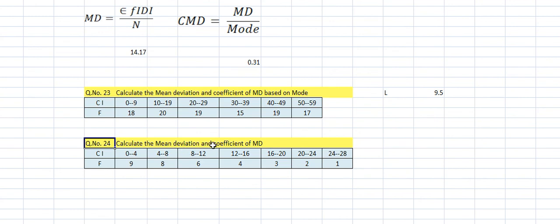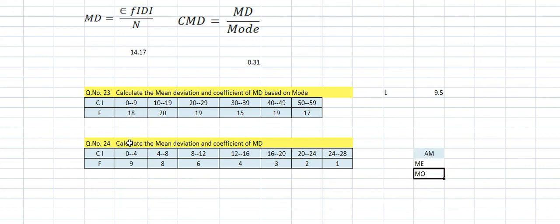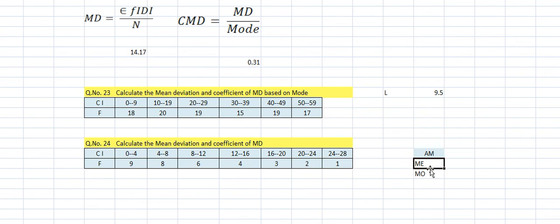Question 24 has no specified base. When no base is stated, you are free to use any one — mean, median, or mode. You select any one average and solve. I am taking marks for everyone; if you don't send the assignments, I am helpless to give marks. Thank you.